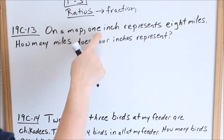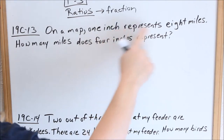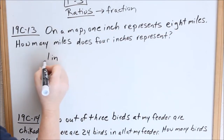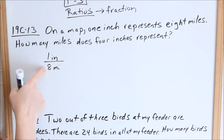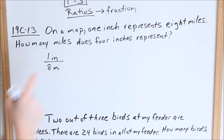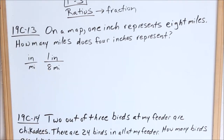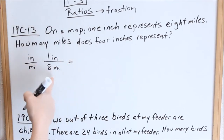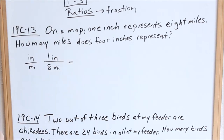On a map, one inch represents eight miles. I can actually make a ratio — a fraction — of that: one inch over eight miles. It's really good to label: inches in the numerator, miles in the denominator. When we have these word problems, our goal is to set it equal to another fraction. How many miles does four inches represent? That's our unknown.